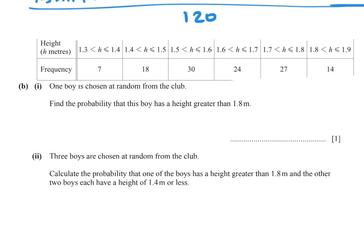Part (b)(i): One boy is chosen at random from the club. Find the probability that this boy has a height greater than 1.8 metres. Greater than 1.8 metres, we have 14, and the total is 120, so the probability is 14 over 120.